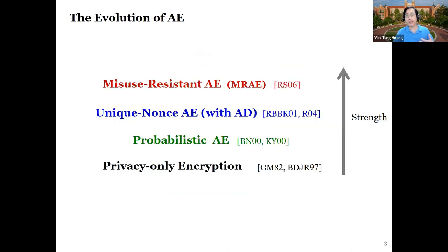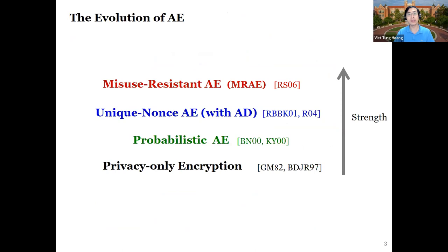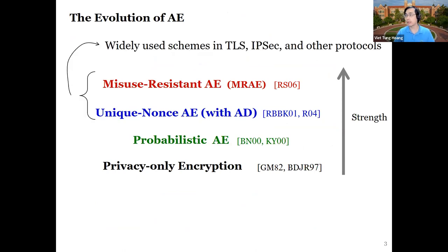The conception of AE emerged in the year 2000 as a way to add authenticity to classical encryption, and it then quickly moved from theory to practice. Since then there have been a number of efforts in strengthening the original notion, such as unique-nonce AE or misuse-resistant AE. These efforts have led into widely used schemes in TLS, IPsec, and many other network protocols.